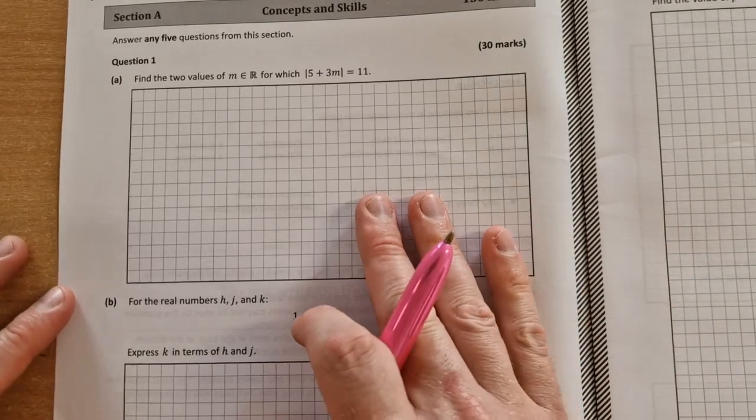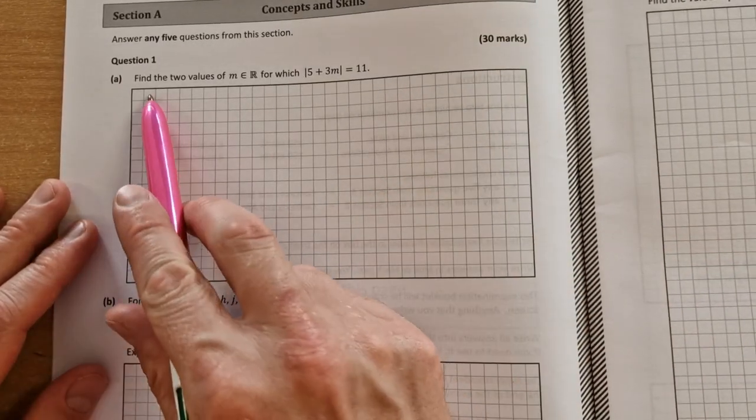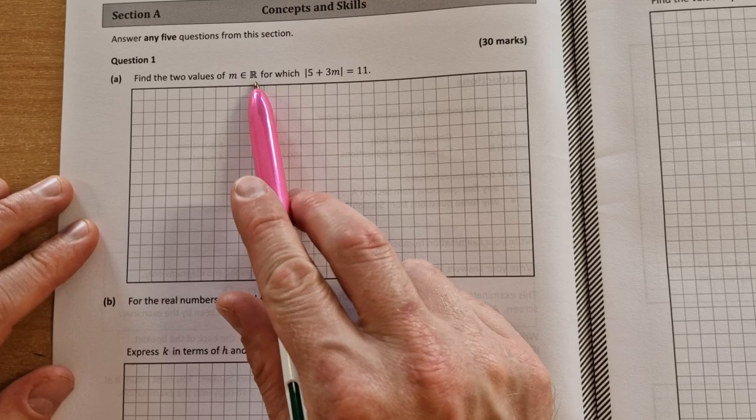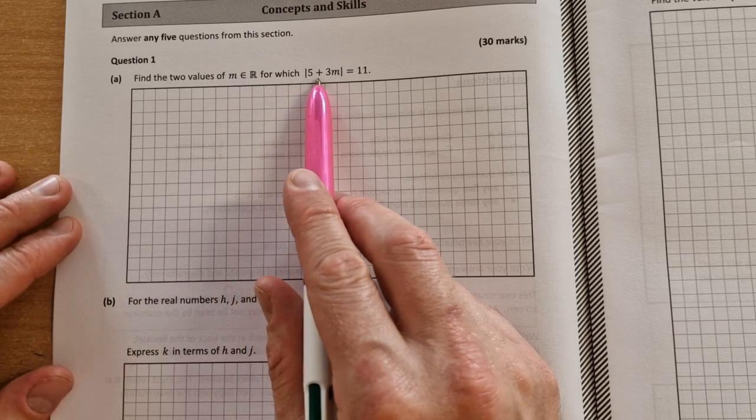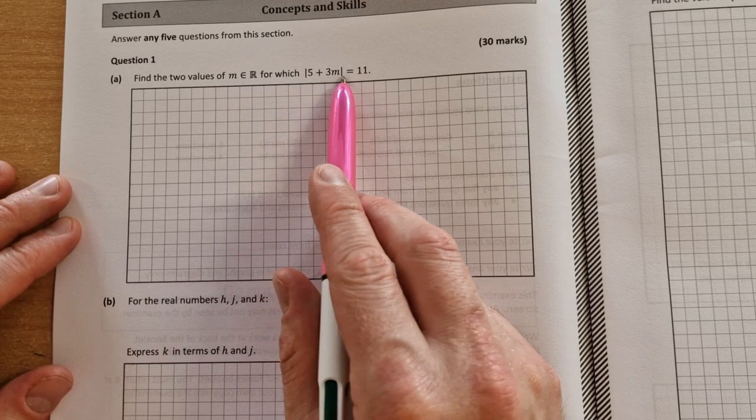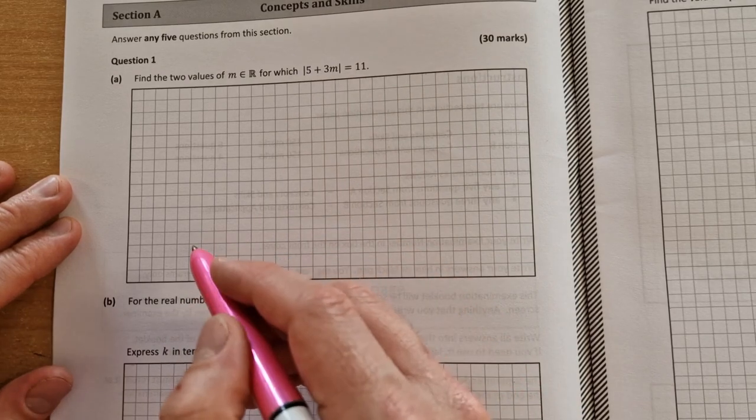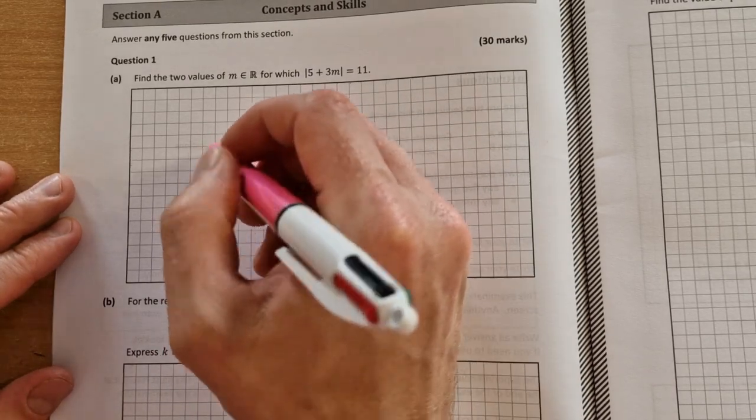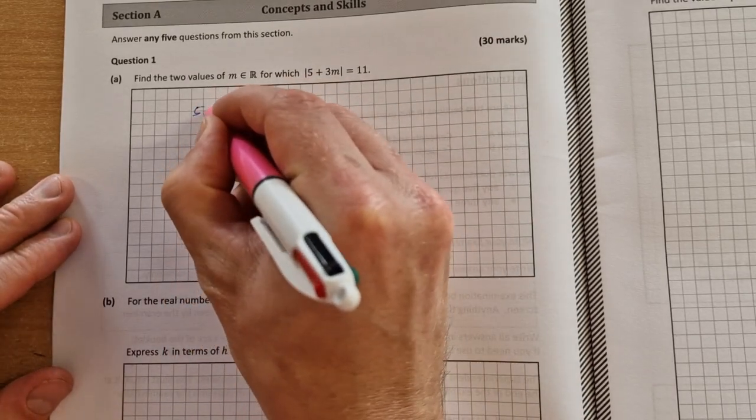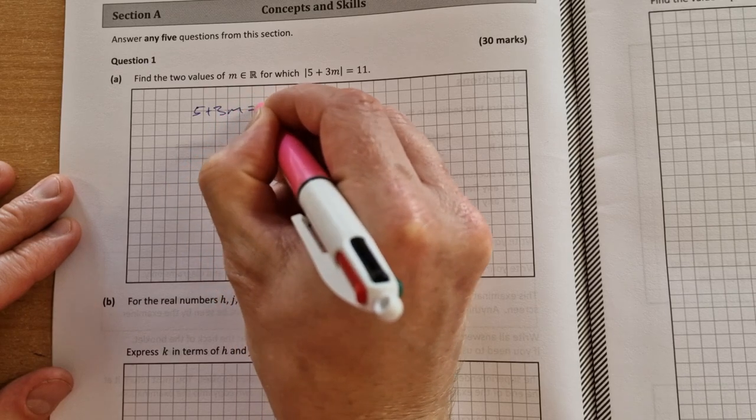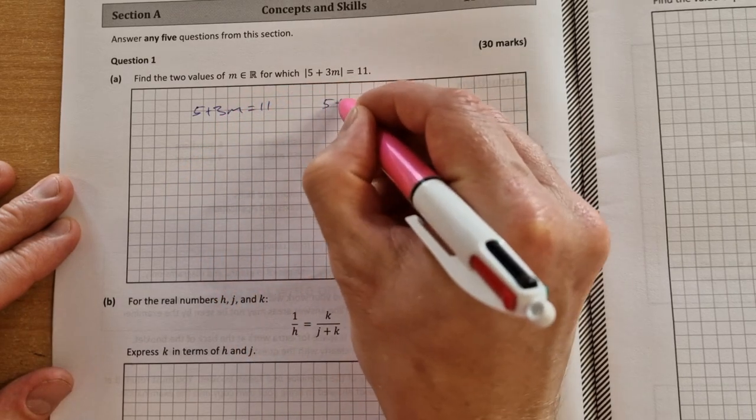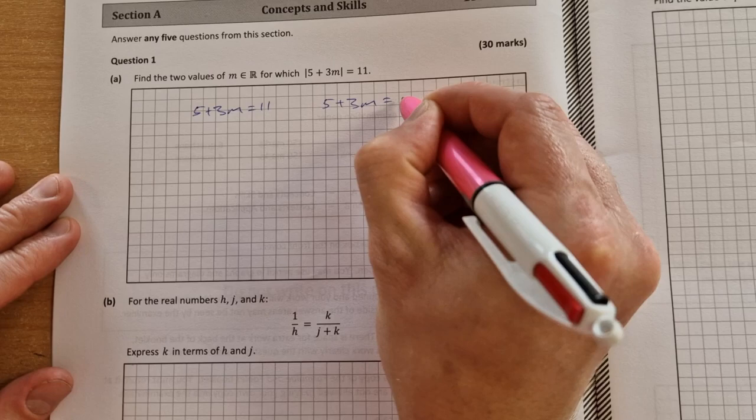So the first part of question 1, find the two values of m, an element of r, for which the absolute value of 5 plus 3m is equal to 11. So the simplest way to do this is to split it up as 5 plus 3m equals 11, and 5 plus 3m equals minus 11.